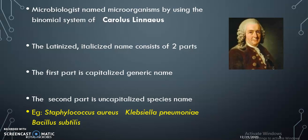The binomial nomenclature system was introduced by Carolus Linnaeus and is followed by microbiologists for naming microorganisms. According to this system, the name has two parts: the first part is the capitalized generic name, and the second part is the uncapitalized species name.